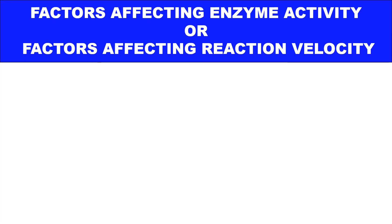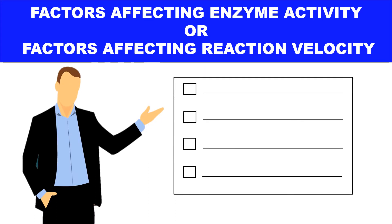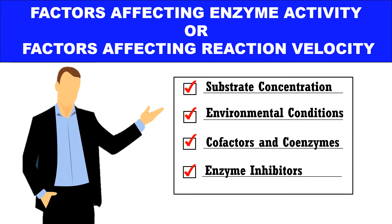Hello everyone, I am Dr. Neeraj and today I will discuss some factors that affect enzyme activity, or factors that ultimately affect the reaction velocity. These factors include: first, substrate concentration; second, environmental conditions; third, cofactors and coenzymes; and last, enzyme inhibitors. These factors may either increase or decrease the reaction velocity. Let's discuss them in detail.